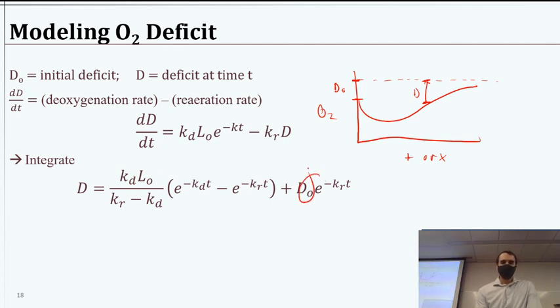So this L-naught is the ultimate BOD remaining. This is the initial deficit. Kr is that reaeration constant. KD is the deoxygenation rate constant. All these parameters. And we can solve then for the deficit at any given time if we know those parameters. So that's pretty handy.